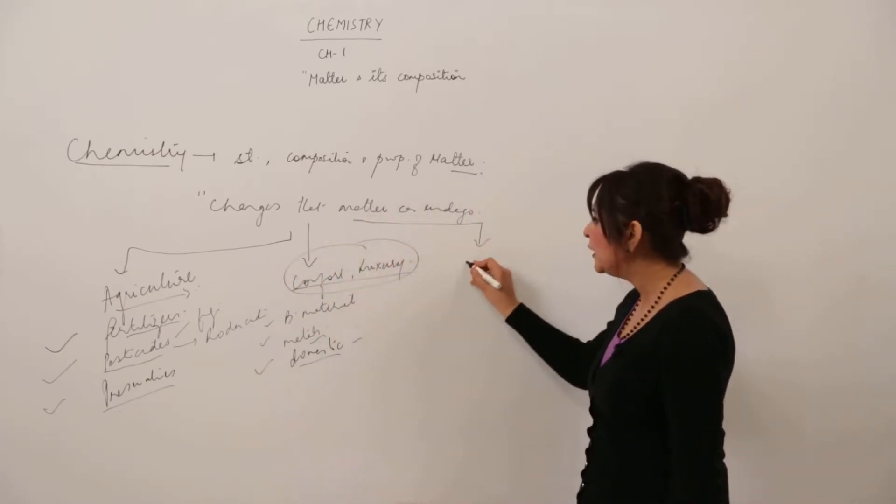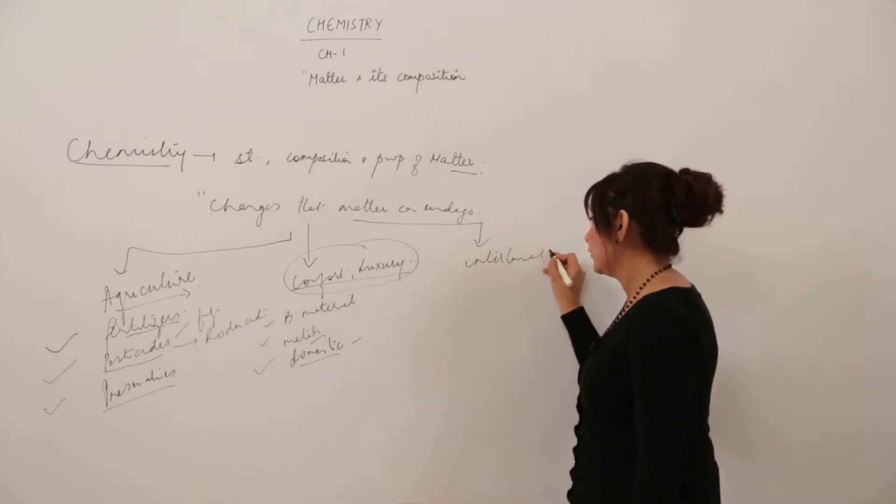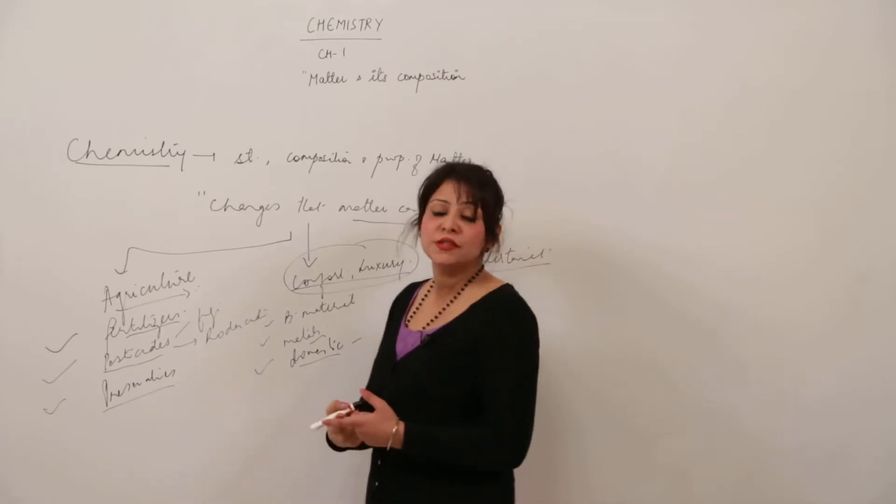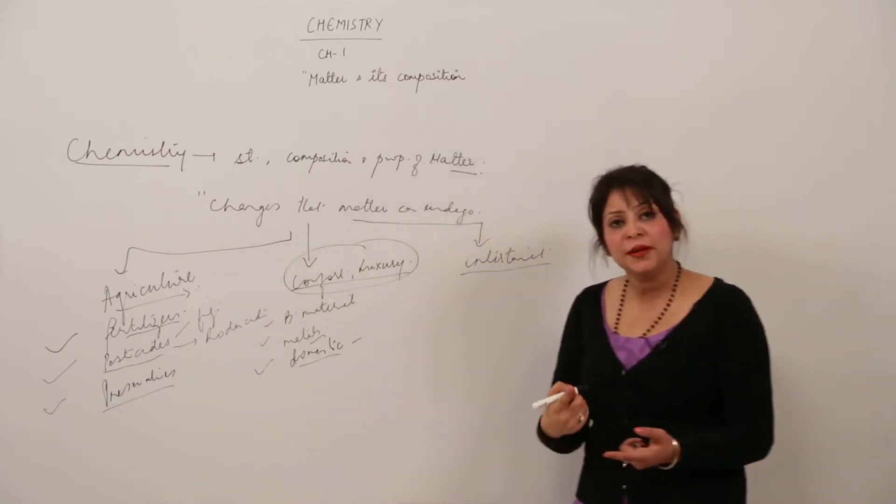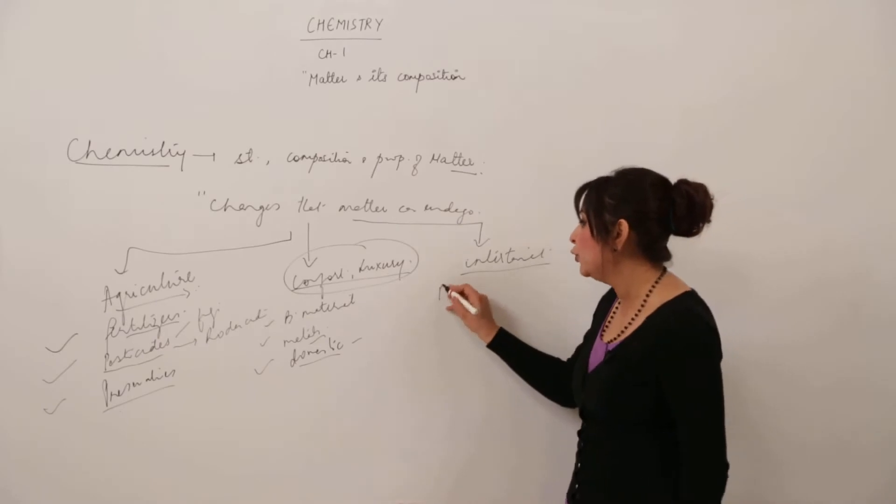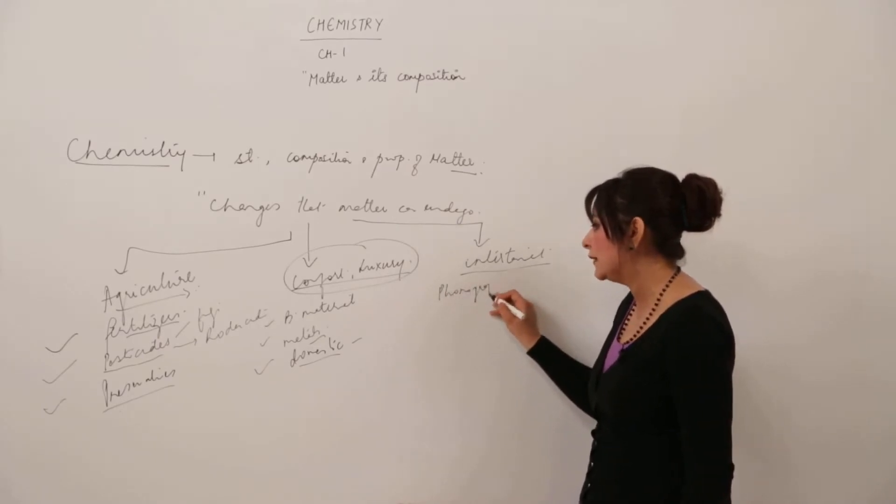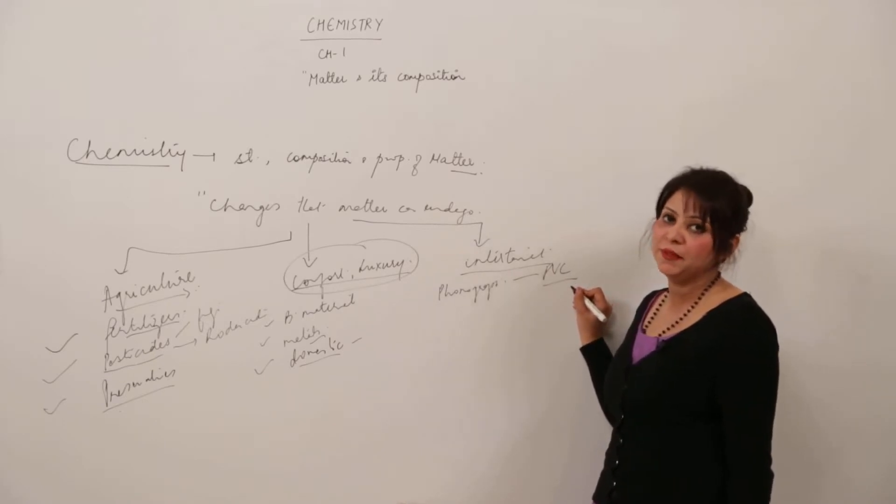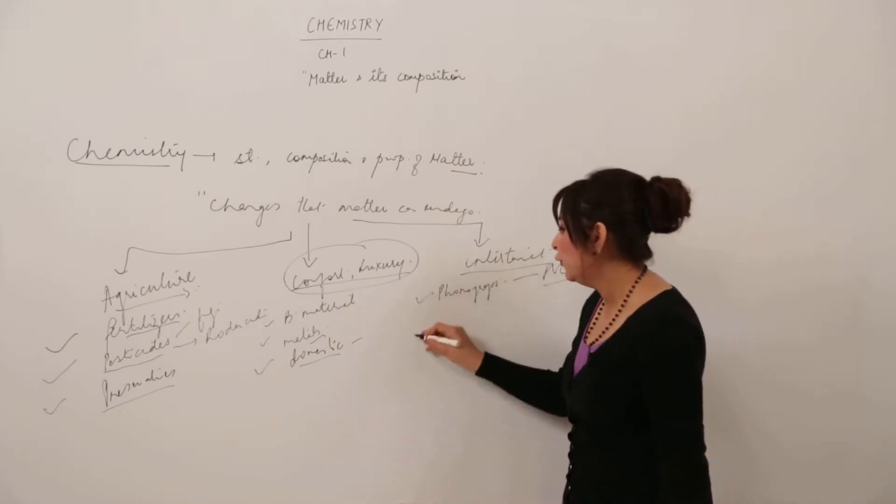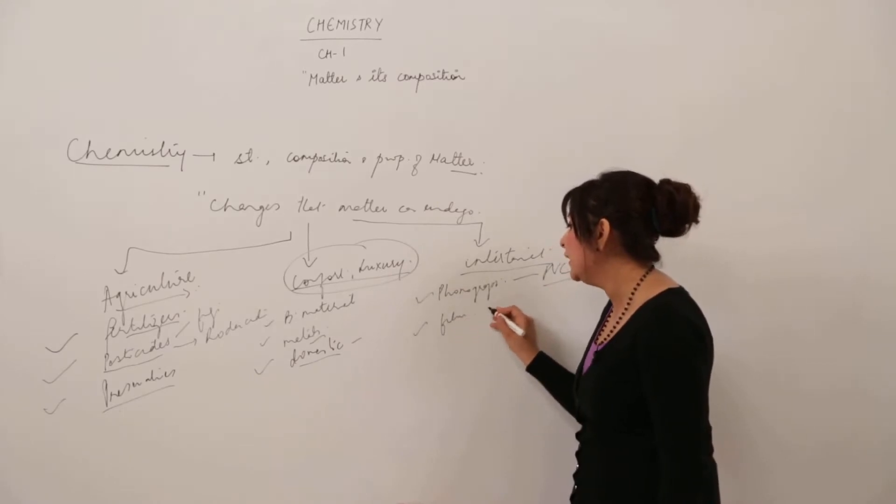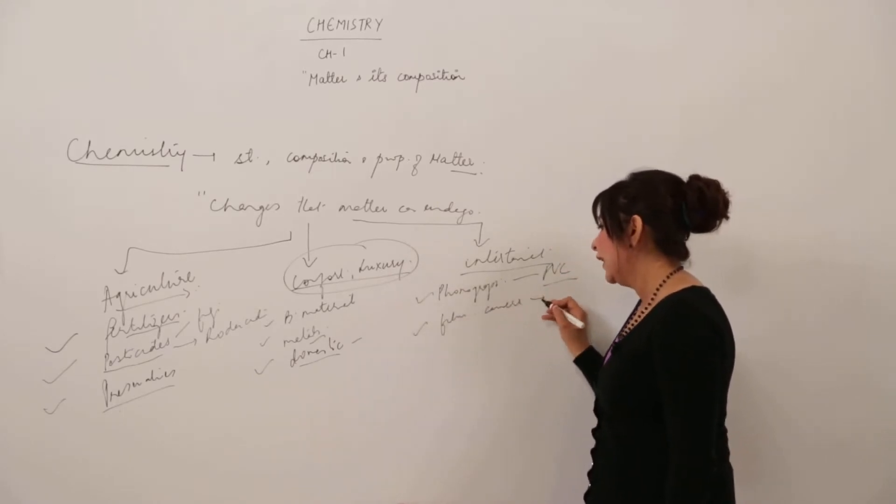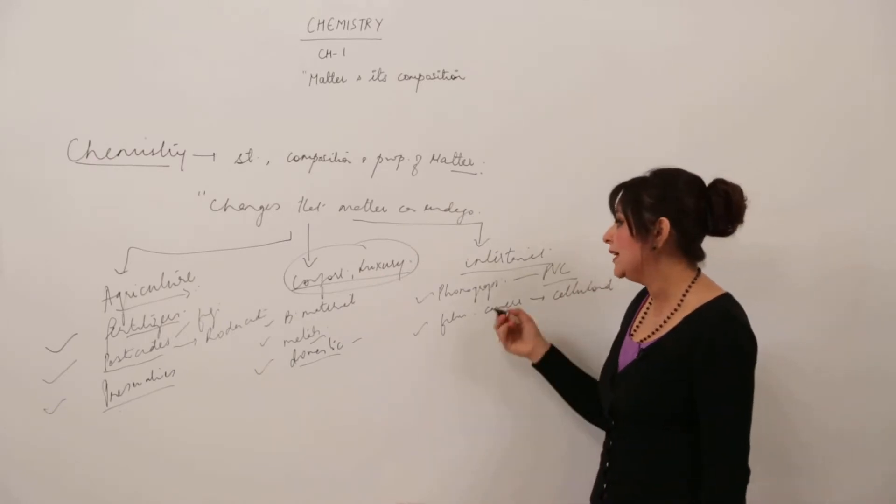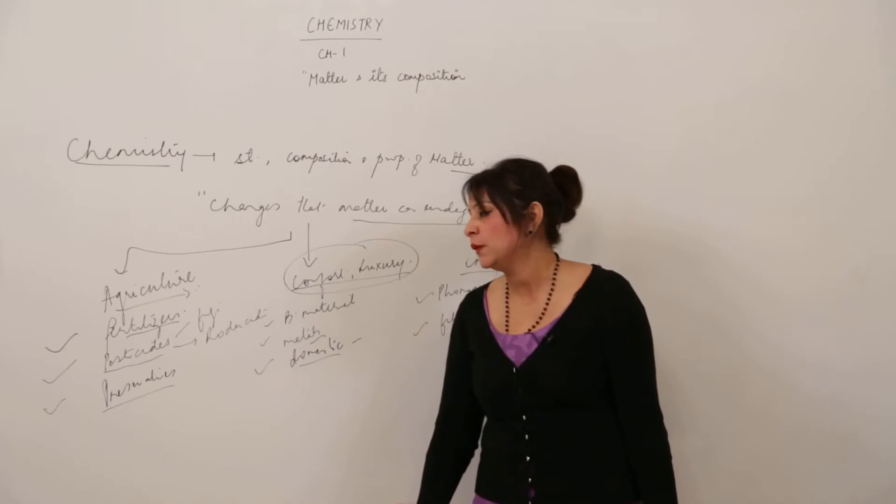Chemistry plays a role in entertainment. To amuse yourself, you see movies and listen to music—these come from chemistry. Phonographic records contain PVC, polyvinyl chloride, a chemical compound. Films used in cameras are made of celluloid, also a chemical compound.